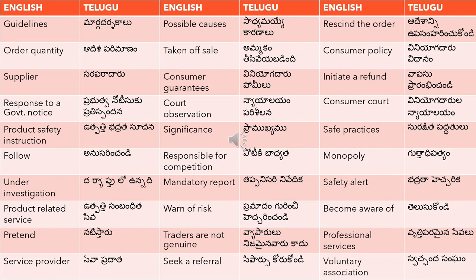'Significance' means 'pramukhita'. 'Safe practices' means 'surakshita paddhatulu'. To 'follow' something — like follow the guidelines or follow the instructions — means 'anusarinchasandi'. 'Responsible for competition' means 'potiki bhadrata' — all companies are responsible for healthy competition in the market.